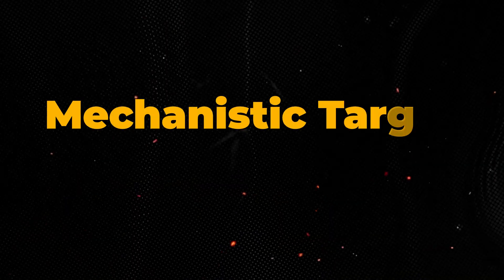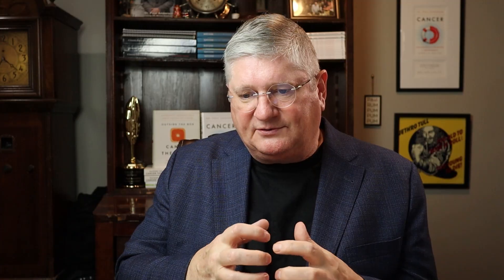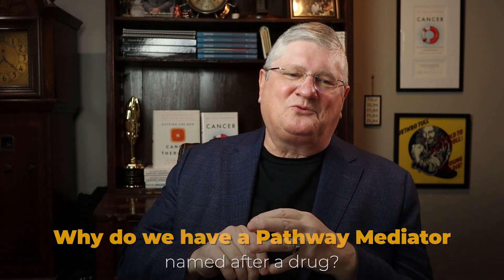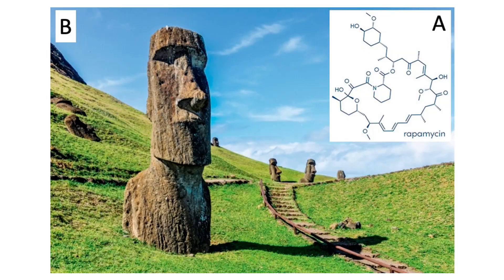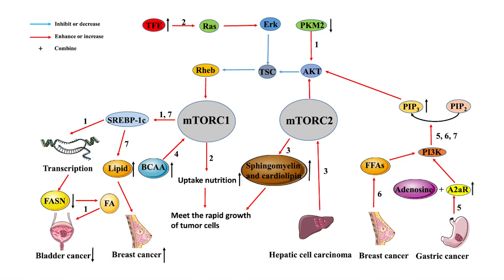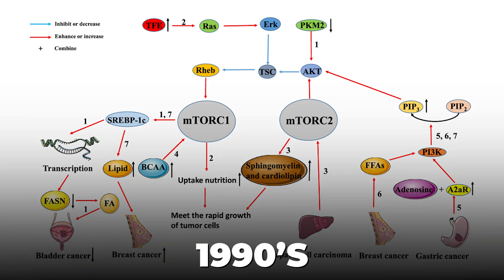That's kind of what I want to get to here today. mTOR — little m, capital T-O-R — stands for the mechanistic target of rapamycin. The first thing you might wonder is, why do we have a pathway mediator named after a drug? The reason is that we humans discovered the drug rapamycin around 1964 or so, and we really didn't fully elucidate the pathways that mTOR works in until the 90s, 1990. So there's about a 25-30 year lag.